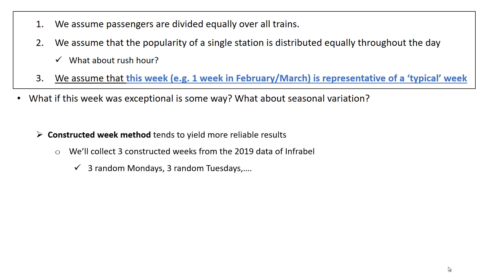To fix this, I use the constructed week method, which tends to yield more reliable results. This means we will collect — in this case I opted for three constructed weeks — from the 2019 data of InfraBell. So we'll collect three random Mondays, three random Tuesdays, three random Wednesdays, etc. from 2019. I will fetch the planned and actual arrival and departure dates for these 21 days in total — three constructed weeks.